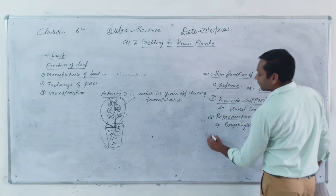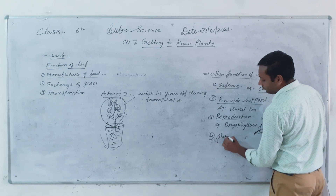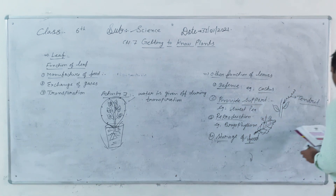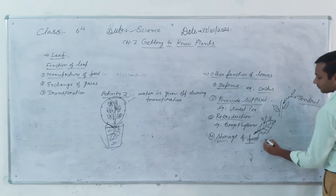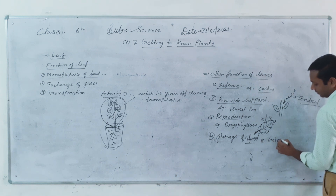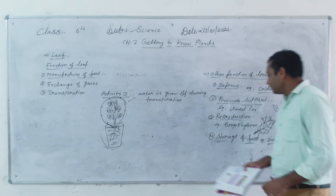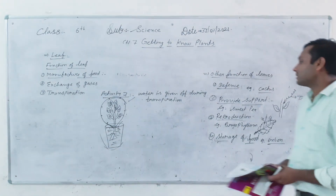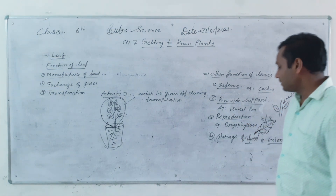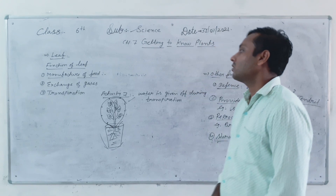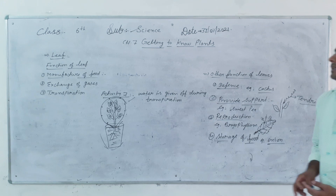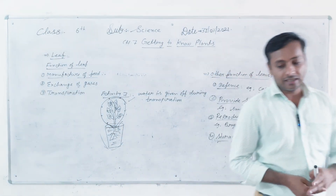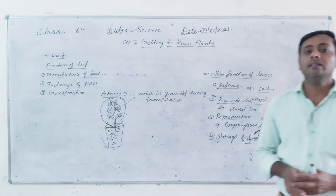Next is storage of food. Some plants store food in their leaves. For example, onion — the fleshy scales of the onion store food. So the functions of leaves include defense, support, reproduction, and storage of food. Next, we will discuss flower structure and functions in the next class.